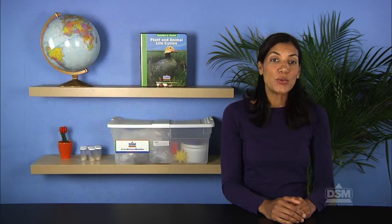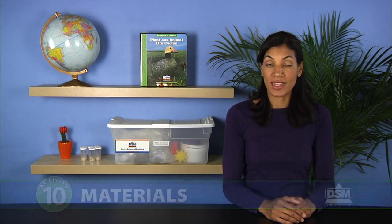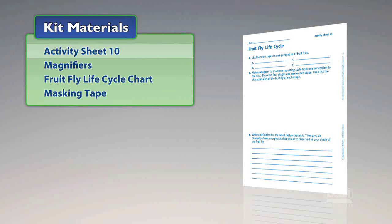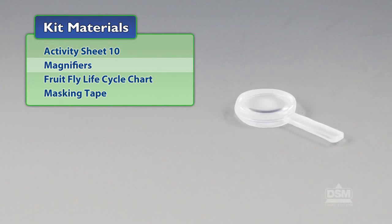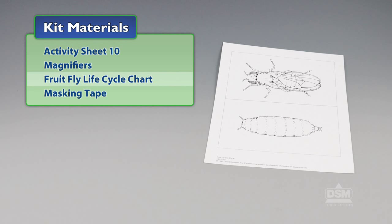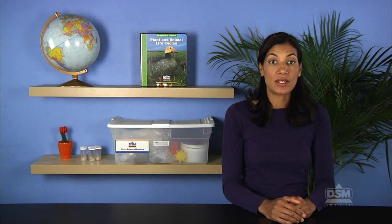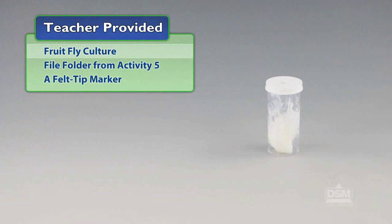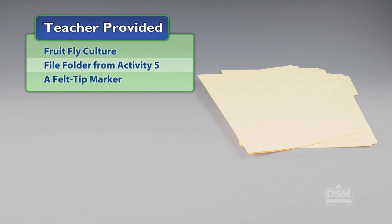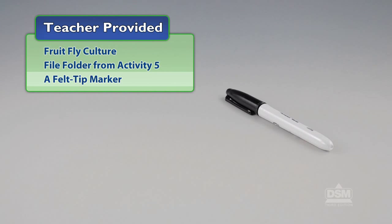You will need the following materials from the kit: Activity Sheet 10, magnifiers, fruit fly life cycle chart, and masking tape. You will also need to provide fruit fly culture, file folder from Activity 5, and a felt tip marker.